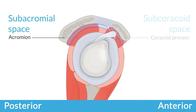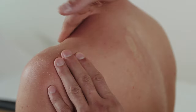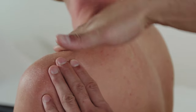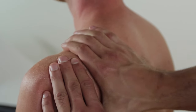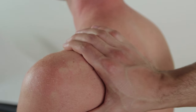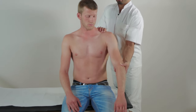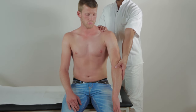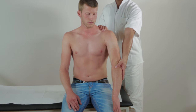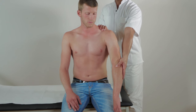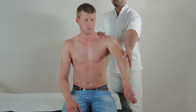Subacromial impingement can be assessed by the Neer test, which further narrows the subacromial space and therefore provokes pain. Start by stabilizing the scapula and the connected acromion with one hand. The other hand rotates the patient's arm internally, thereby bringing the greater tubercle underneath the roof of the shoulder.